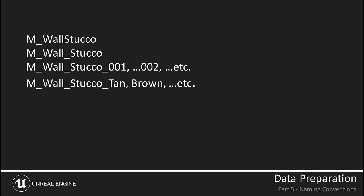Next up, we have the name of the asset — this is pretty self-explanatory. If the asset is a material, it might be named wall_stucco. Keep the name short and sweet but descriptive enough to give you the info you need. Some authors number their assets that have similar names — for instance, wall_stucco_001, wall_stucco_002, etc. But it could be just as good to be more descriptive, like wall_stucco_tan and wall_stucco_brown. Just remember to keep it short.